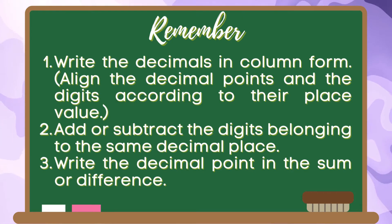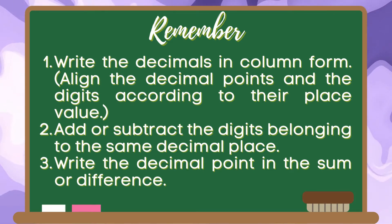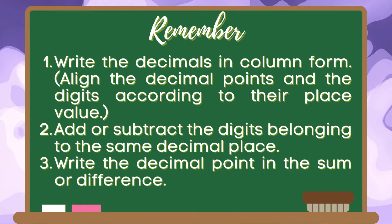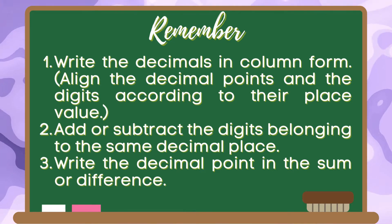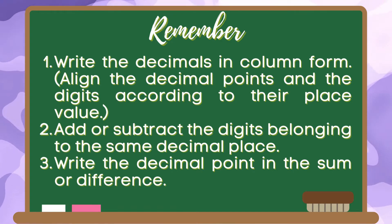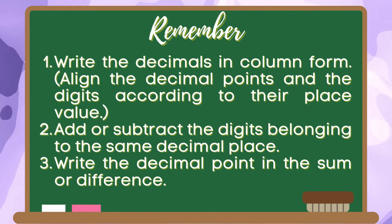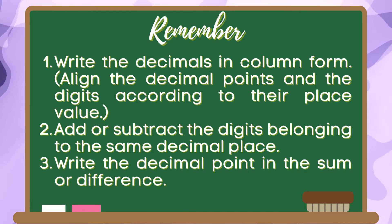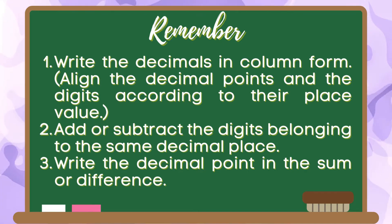Remember, to add or subtract decimal numbers, here are the steps to follow. First, write the decimals in column form. Do not forget to align the decimal points and the digits according to their place value. Second, add or subtract the digits belonging to the same decimal place. And lastly, write the decimal point in the sum or difference of the given numbers.